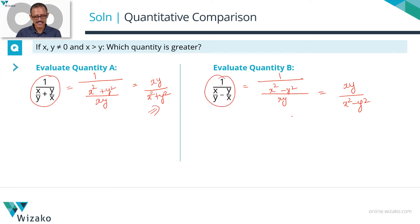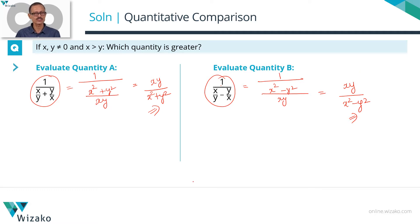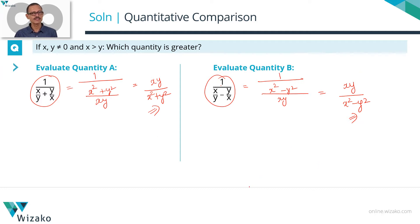We have essentially rewritten both quantities. Quantity A is x·y / (x² + y²) and Quantity B is x·y / (x² − y²). Before we compare them, let's consolidate this and decide on our approach.